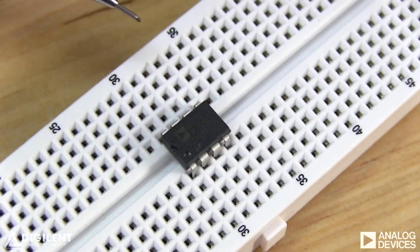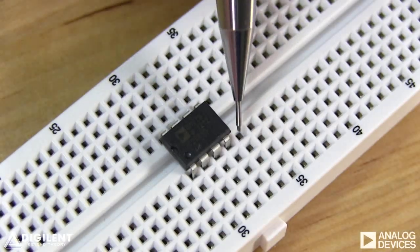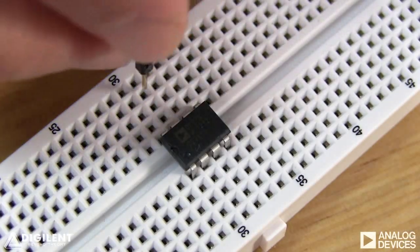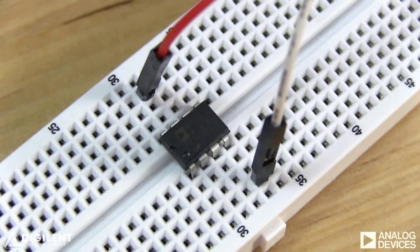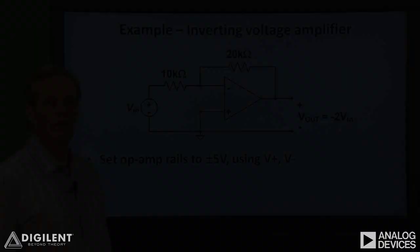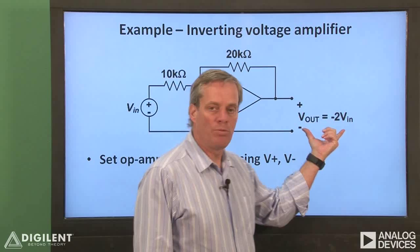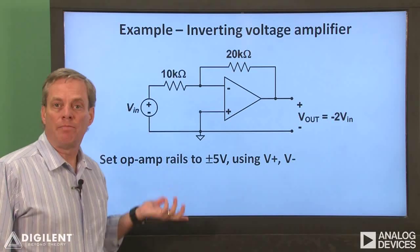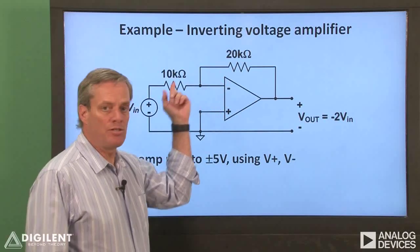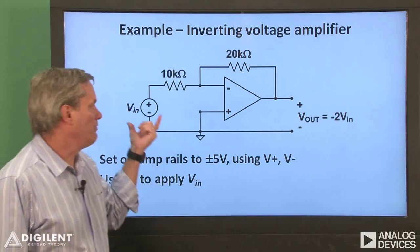We will always need to provide power to our circuit, so I'll connect the voltage supplies before wiring up the example circuit. This pin is the positive voltage supply and this pin is the negative voltage supply. I'll use V-plus on my Analog Discovery for the positive voltage supply and V-minus for the negative. I generally connect my power supplies first, since forgetting to connect these is my number one silly mistake when wiring circuits. For this video, we'll create an inverting voltage amplifier circuit — the output voltage Vout should be negative 2 times the input voltage Vin.